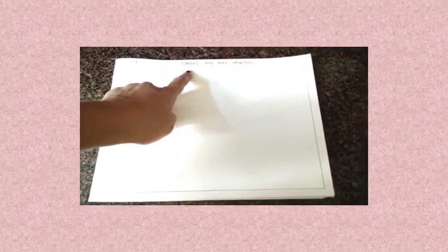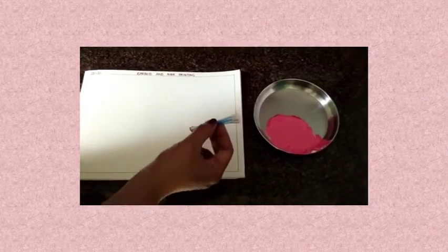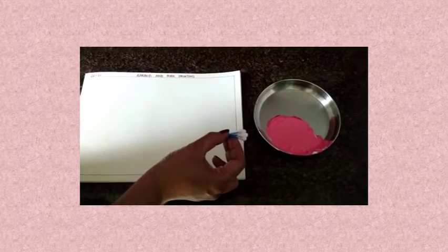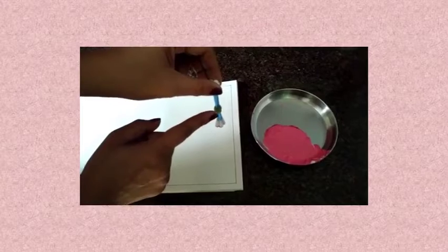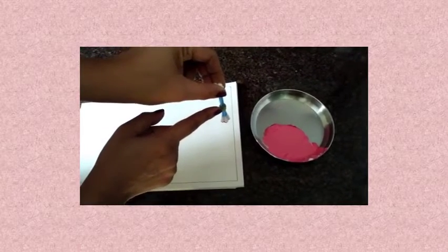You will first prepare the drawing book. So you will write today's date on the top and the topic which is earbud and fork painting. So parents, you will take some earbuds. I have taken four. And use a rubber band and put them together in the center like this.